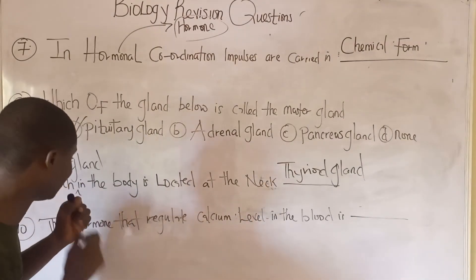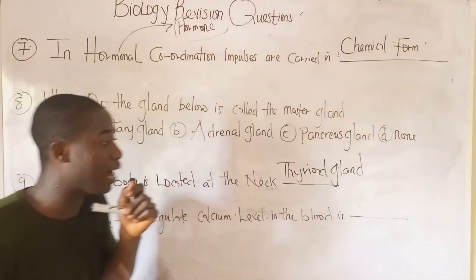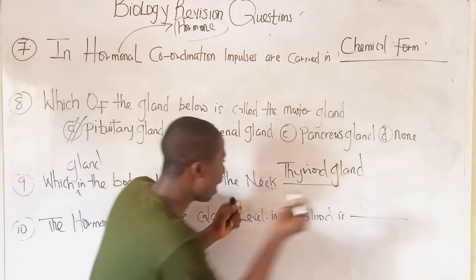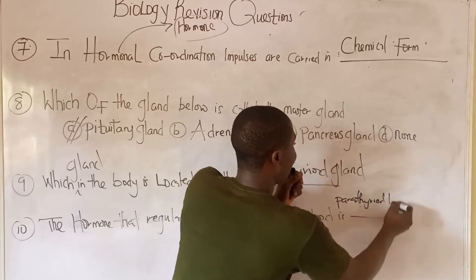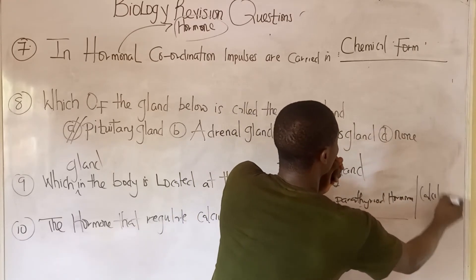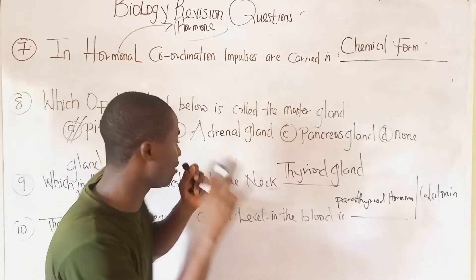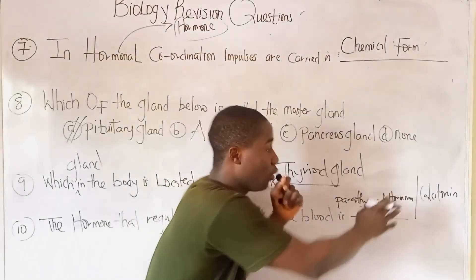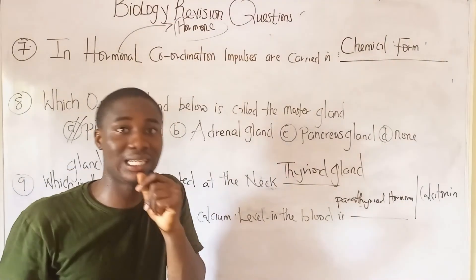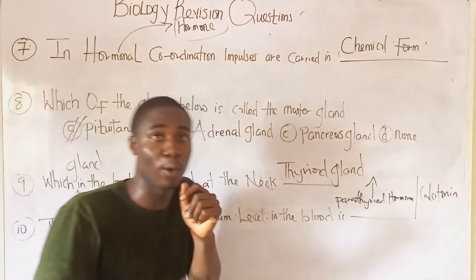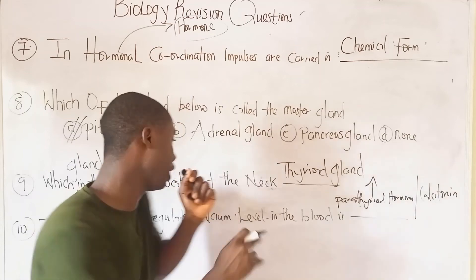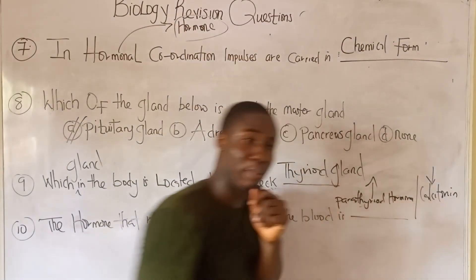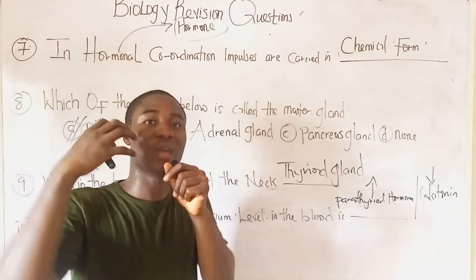Question ten: which hormone regulates calcium level in the blood? There are two major hormones: the parathyroid hormone and calcitonin. The parathyroid hormone increases the level of calcium in the blood, while calcitonin decreases the level of calcium in the blood. Both must be noted as regulators of calcium levels.